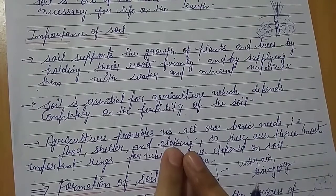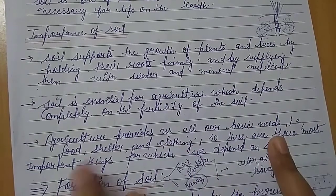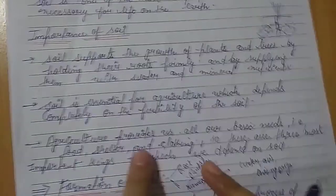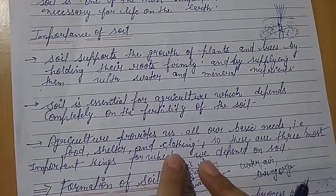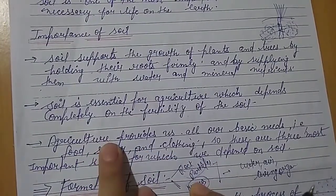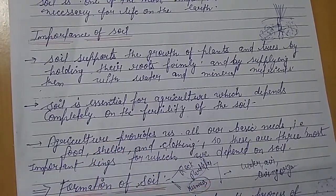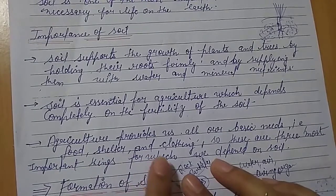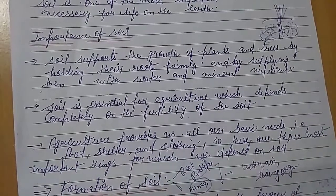Agriculture provides us all our basic needs such as food, shelter, and clothing. These are the three most important things for which we depend on soil, because these basic things are obtained from agriculture, and agriculture is dependent on soil. So because of soil, food, shelter, and clothes are available to us.